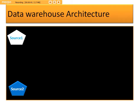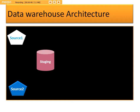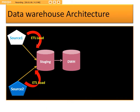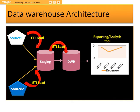Here you can see there are different source systems — Source 1, Source 2 databases. The staging database will be formed from the source; the data will be moved into staging, and from staging the data will be moved into the data warehouse — that is the final one. How this data movement happens is with the use of an ETL tool. ETL load will happen from source to staging, and also from staging to data warehouse. The final usage of data warehouse data will be shared to reporting or analysis tools.